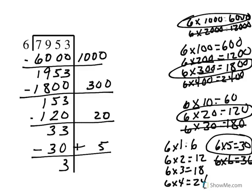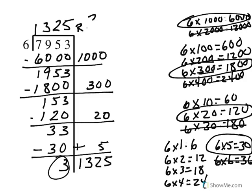Now I want to add all my partial quotients: 1,000 plus 300 plus 20 plus 5, which gives me 1,325. That's my quotient, which goes up here — 1,325 — with a remainder of 3. And that is how you do division with partial quotients.